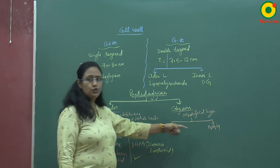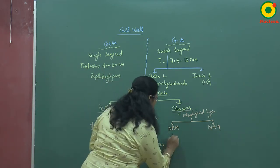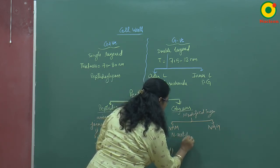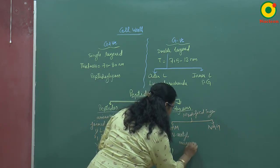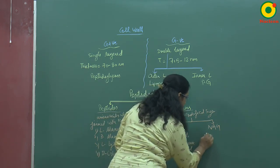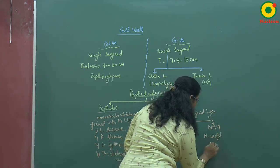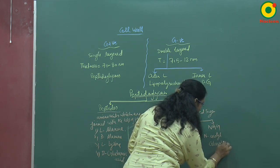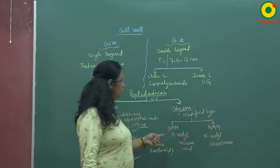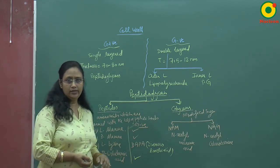The glycan part is made up of two types of modified sugar: NAM and NAG. NAM stands for N-acetyl muramic acid, and NAG stands for N-acetyl glucosamine. These two modified sugars are present in both gram positive and gram negative bacteria.